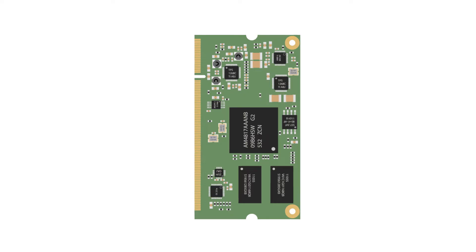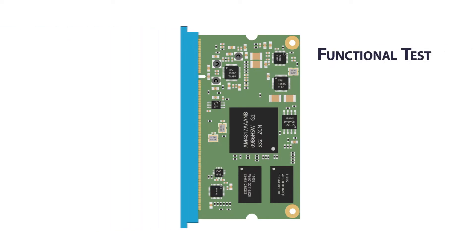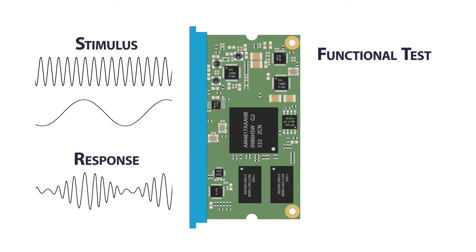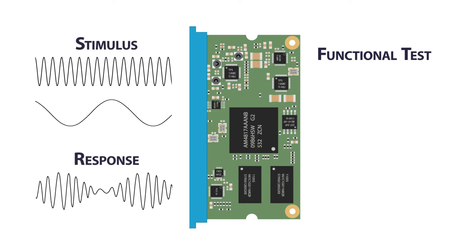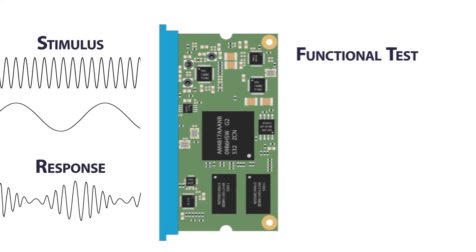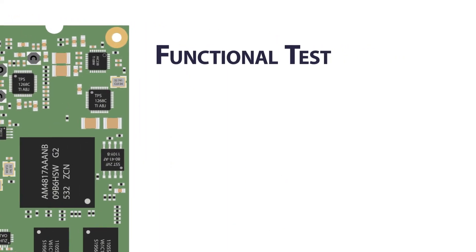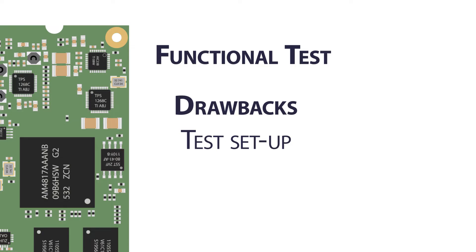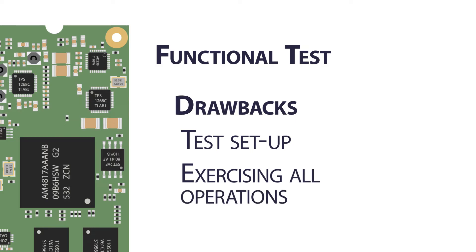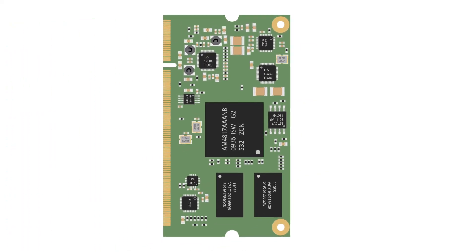Historically, the most straightforward way to test electronic systems has been functional test. As the name implies, it means exercising a system as it is expected to be used in the target application. Though this approach continues to have merit, it has some significant drawbacks. First, it may be difficult to replicate a functional setup that sufficiently mimics the end application. Second, sufficiently testing the operational space of systems with even moderate complexity can be very difficult.